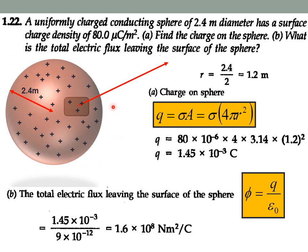In this problem we have a sphere of 2.4 meter radius. The charges are distributed on the surface of the sphere, meaning we have a surface charge density σ = 80.0 µC/m². These positive charges on the surface produce an electric field radially outward. To find the total charge on the sphere, we use Q = σ × A, where A = 4πr². Substituting all values, we calculate Q = 1.45 × 10⁻³ C.